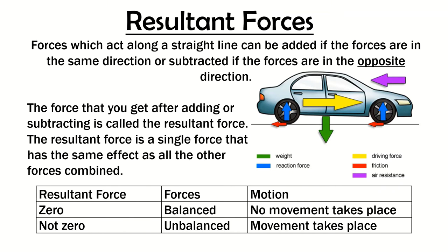At the bottom here, we see resultant force. If the resultant force is zero, then the forces are balanced and no movement takes place. This occurs in this diagram with the weight and reaction force. This car is not moving up or down, and so those forces would be balanced. If the resultant force is not zero, the forces are unbalanced and movement takes place.